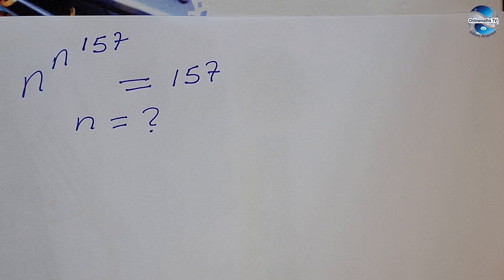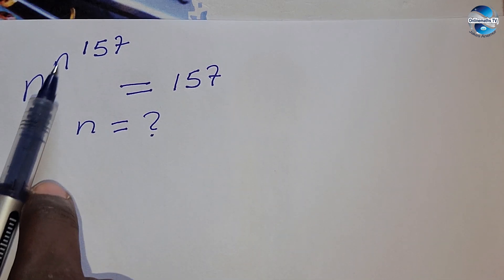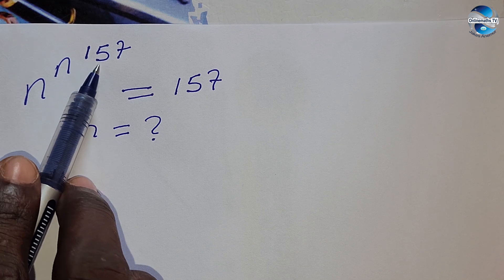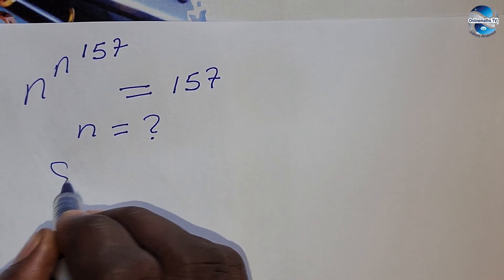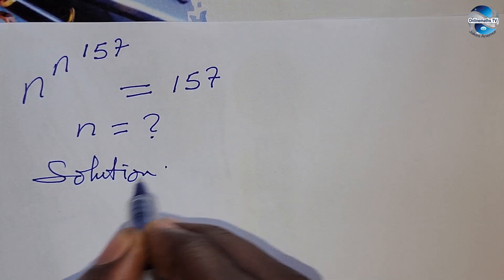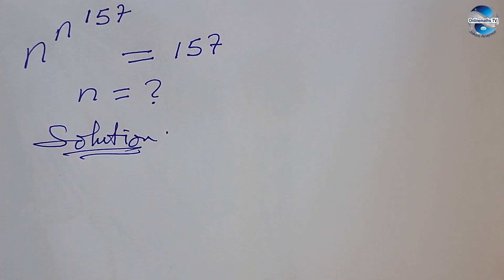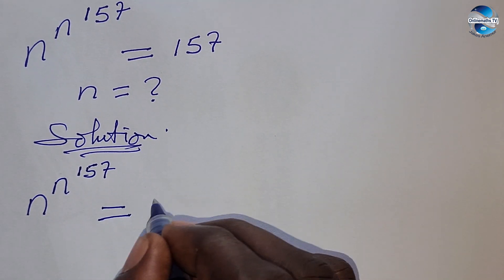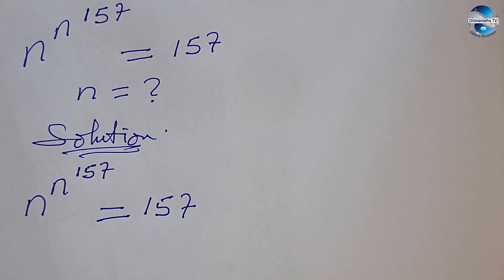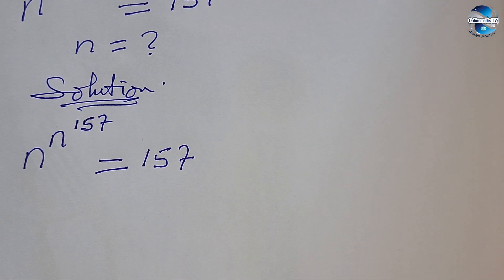Welcome to today's class. We have a nice algebraic equation — a nice exponential equation before us. The question is: n to the power of n, all raised to the power of 157, equals 157. What is the value of n that will satisfy this equation? Let's take our solution. The question again is: (n^n)^157 = 157.